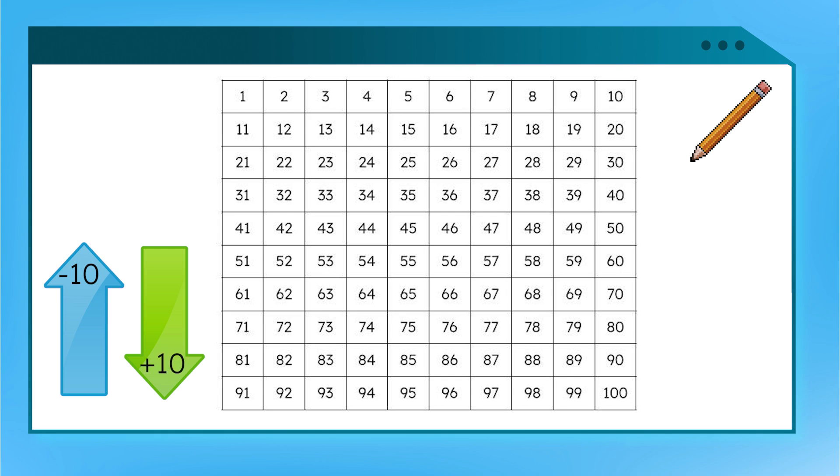What about our numbers going across each row? You got it! If we go across our chart, we can add or subtract 1s, like a number line. If we move backward or to the left, we are subtracting 1. If we move forward or to the right, we are adding 1.